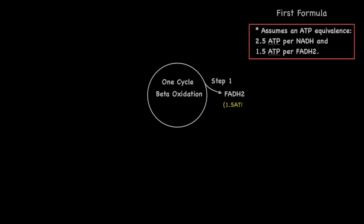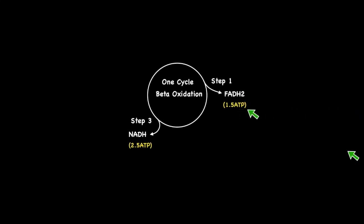Recall that each beta-oxidation cycle produces 1 FADH2 at step number 1 with an equivalence of 1.5 ATPs, and 1 NADH at step number 3 with an equivalence of 2.5 ATPs. Adding each of these ATP values together gives us a total of 4 ATPs per beta-oxidation cycle.